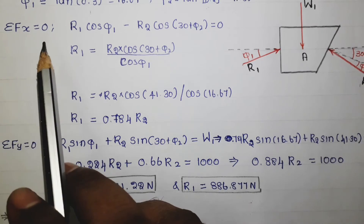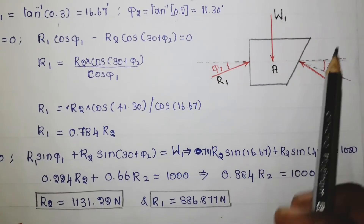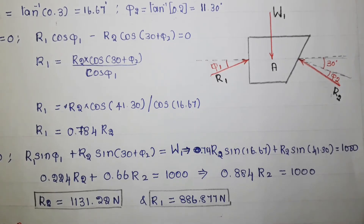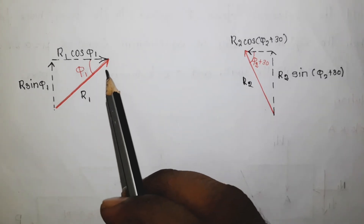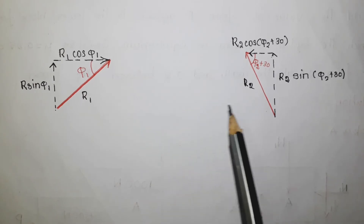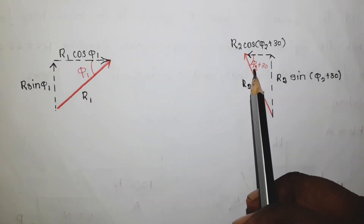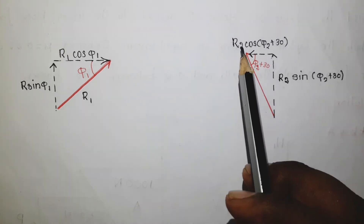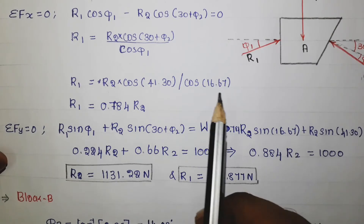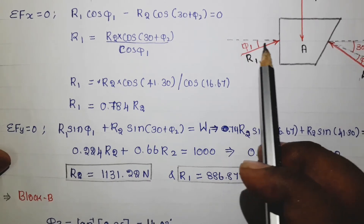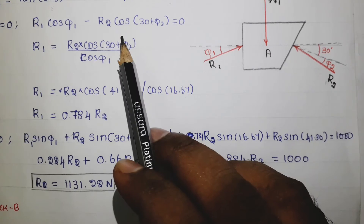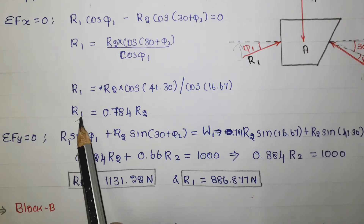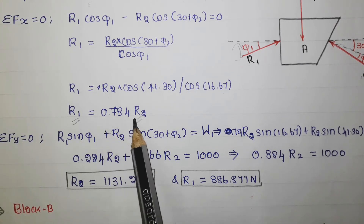Using the equilibrium equation summation of Fx equal to 0, and looking at the free body diagram, both R1 and R2 are neither parallel to the x-axis nor the y-axis, so they must be resolved. The horizontal component of R1 is R1 cos φ1 and for R2 it is R2 cos(φ2 + 30). Setting the summation of horizontal forces to zero, we get the relationship R1 equal to 0.78 R2.